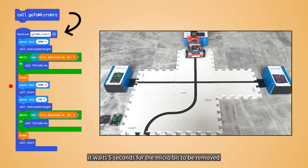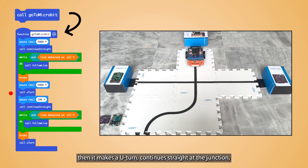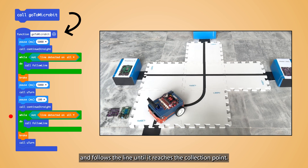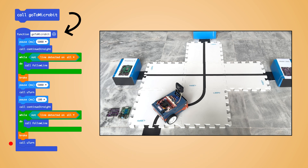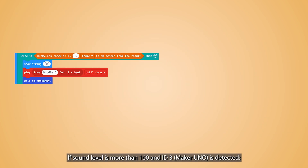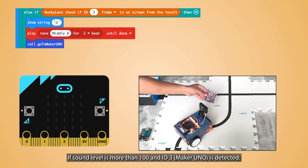It waits 5 seconds for the Micro:bit to be removed, then it makes a U-turn, continues straight at the junction, and follows the line until it reaches the connection point.